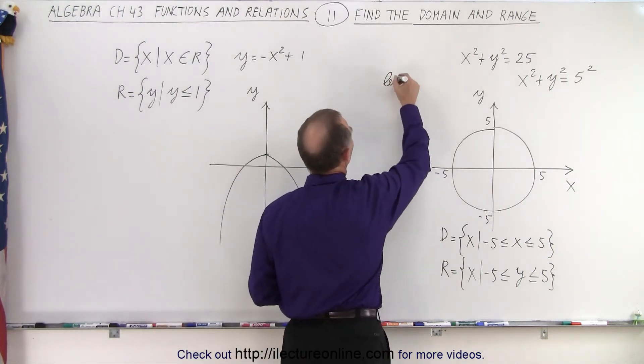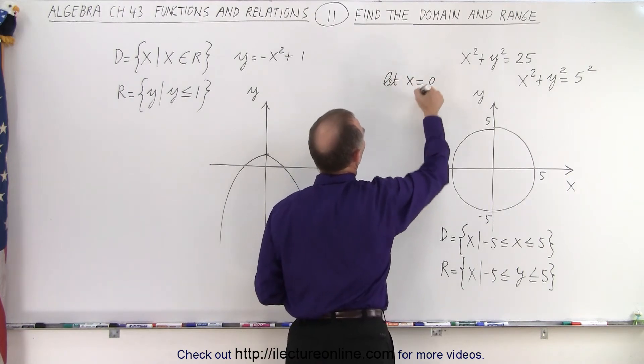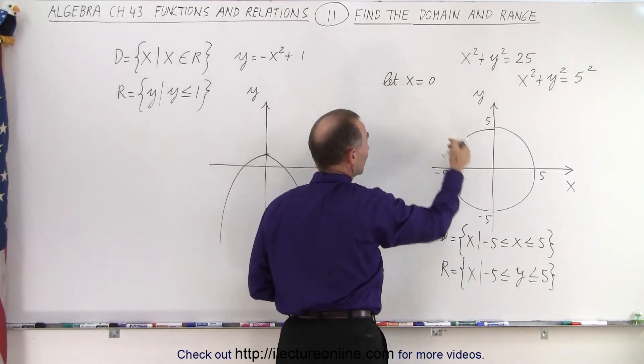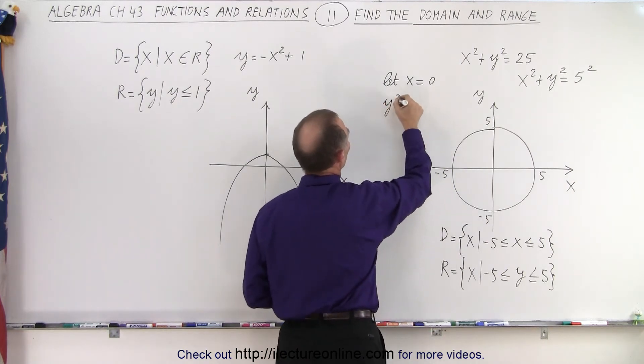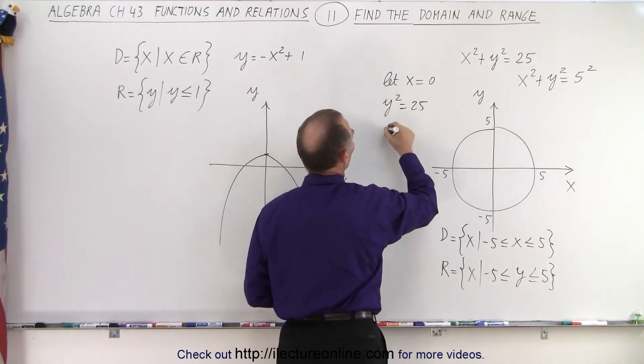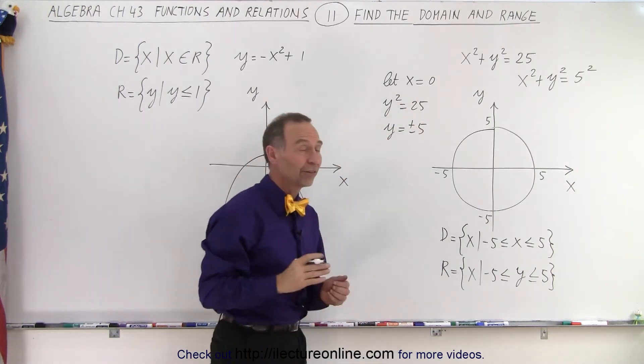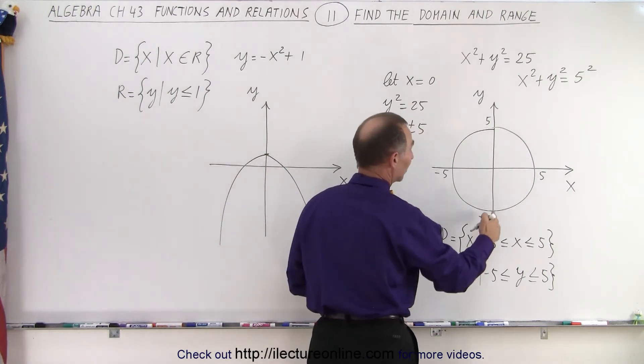Let x equals zero. When x equals zero, which means that's on the y axis, then you can write that y squared equals 25 or y equals plus or minus 5 when you take the square root of both sides. So that means that when x equals zero, you have y equals plus 5 and y equals negative 5.